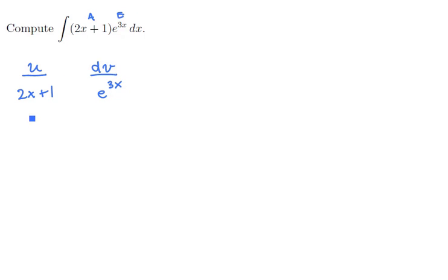So we'll build the table. We'll differentiate the u column to get 2 and integrate the dv column to get 1 third e to the 3x. Now we'll differentiate again. The u column will become 0. We'll integrate again to get 1 ninth e to the 3x. And since we've got a 0 in this column, we're going to stop the table.